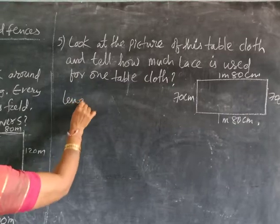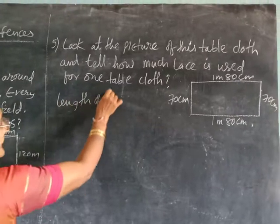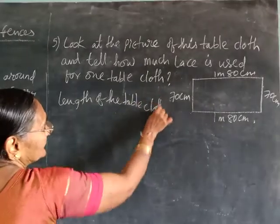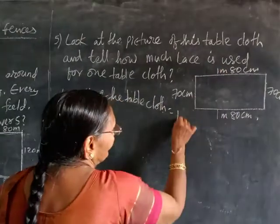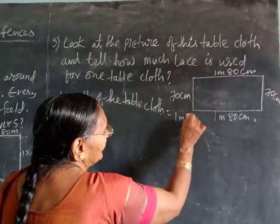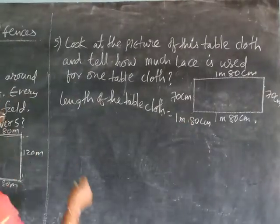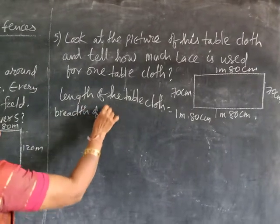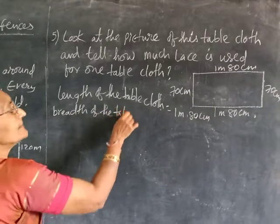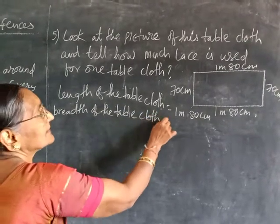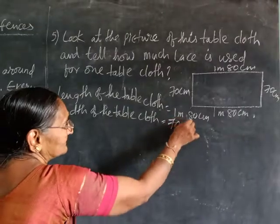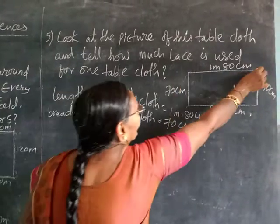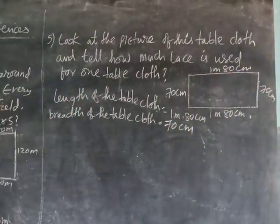What you write? Length of the tablecloth — how much is there? The length is 1 meter 80 centimeters. And breadth of the tablecloth — how much is there? That is 70 centimeters. So total cloth means the length of the boundary. Total cloth means the perimeter.